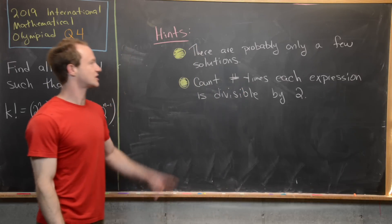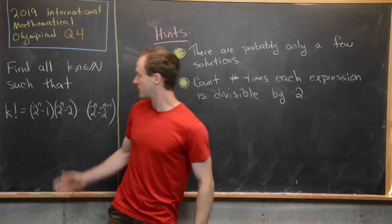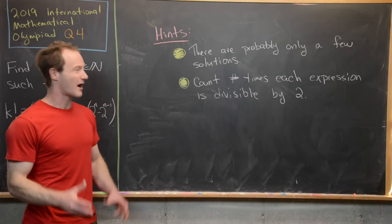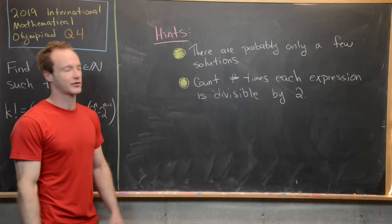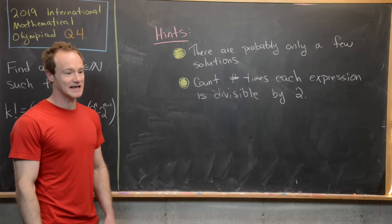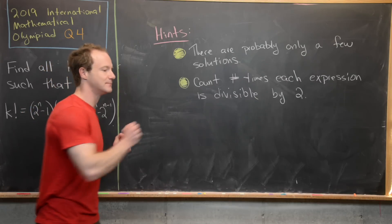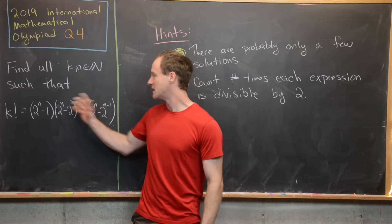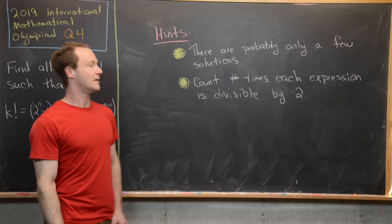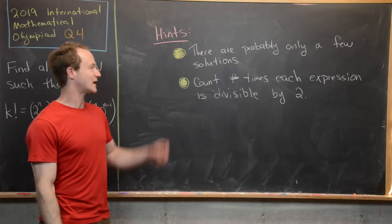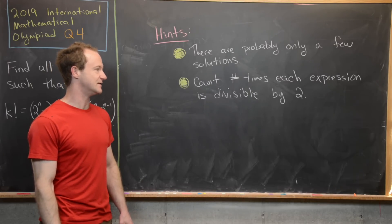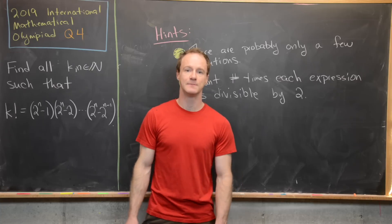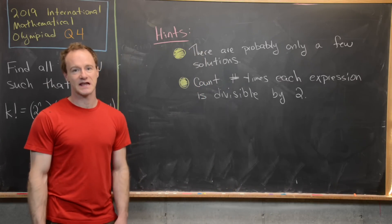Before we get into the solution, let's look at a couple of hints. The first hint is true for any type of problem where you have to find a solution to some outrageous looking equation: there are probably only a handful of solutions — one, two, or three solutions for this equation. The idea is you want to show that after a certain point it's impossible for there to be a certain solution. In other words, after some value of n or after some value of k, it's impossible for this equation to be satisfied. The second hint is to count the number of times each expression is divisible by two — how many times can you divide two out of the right hand side versus the left hand side. So maybe go ahead and pause the video, give this problem a go with these hints, and then we'll look at the solution.